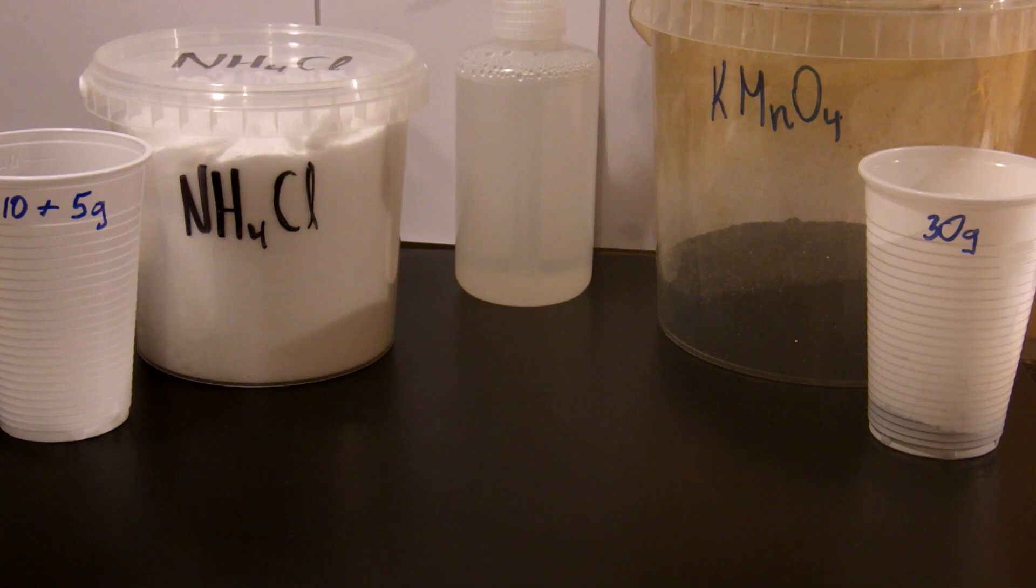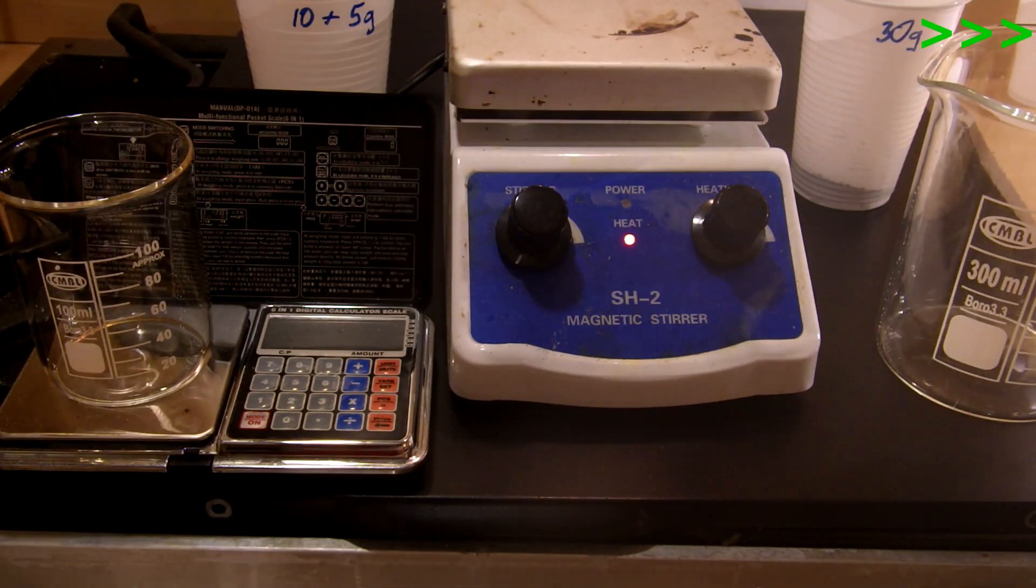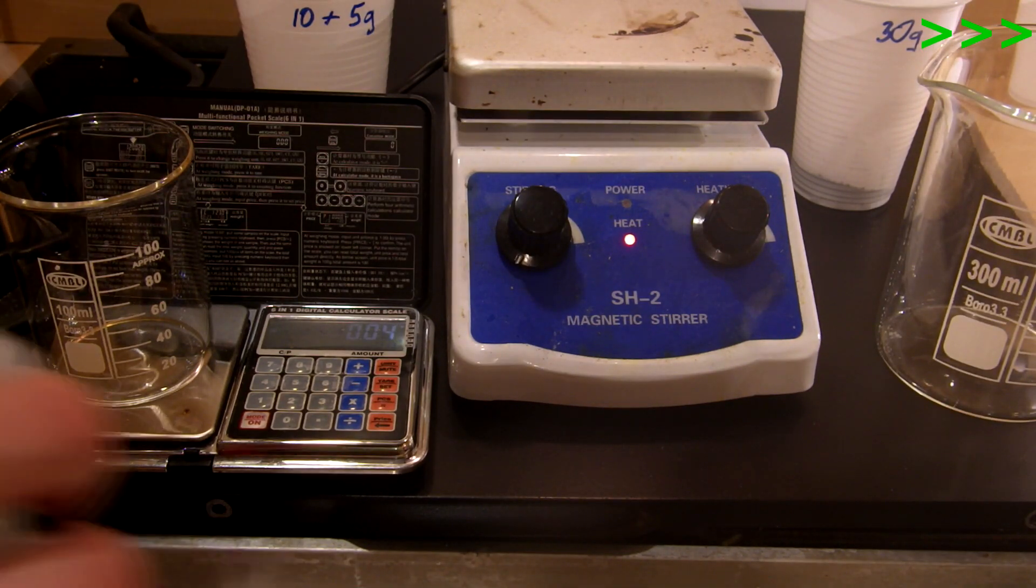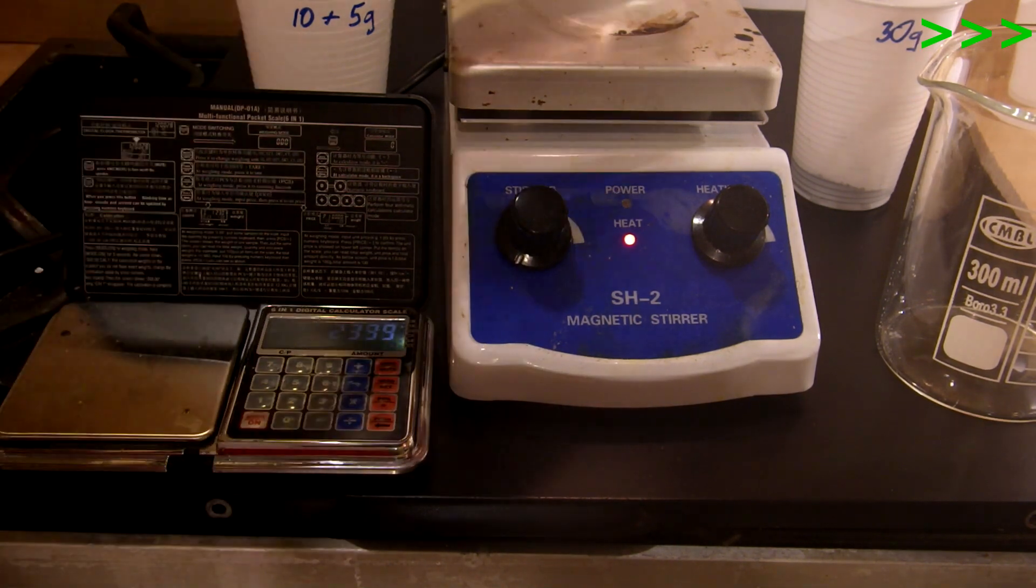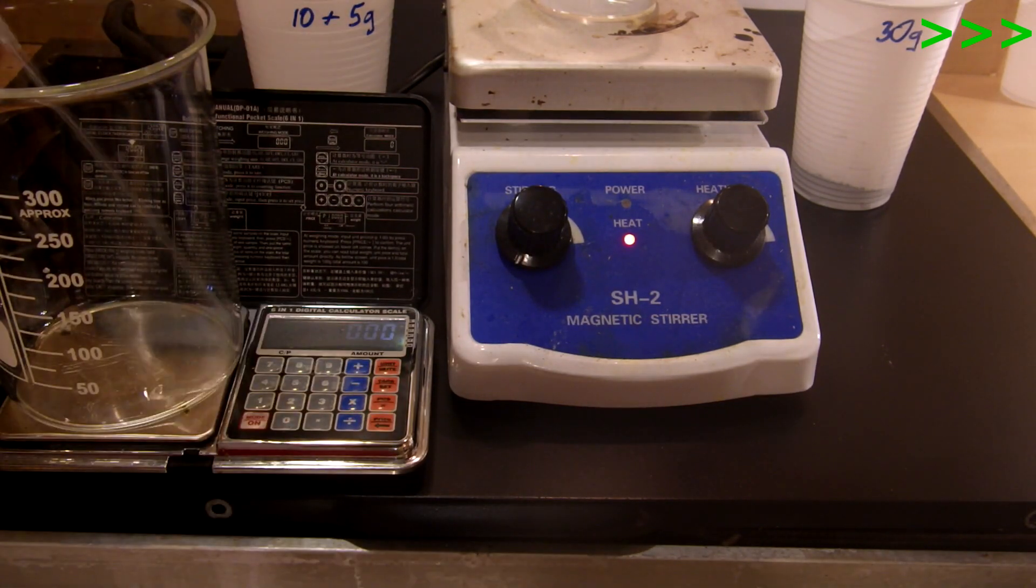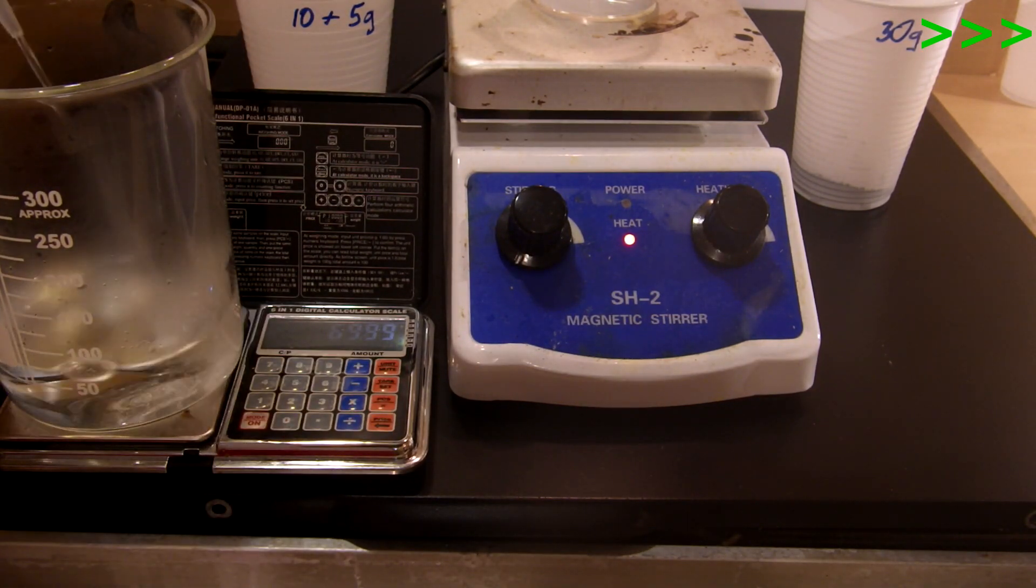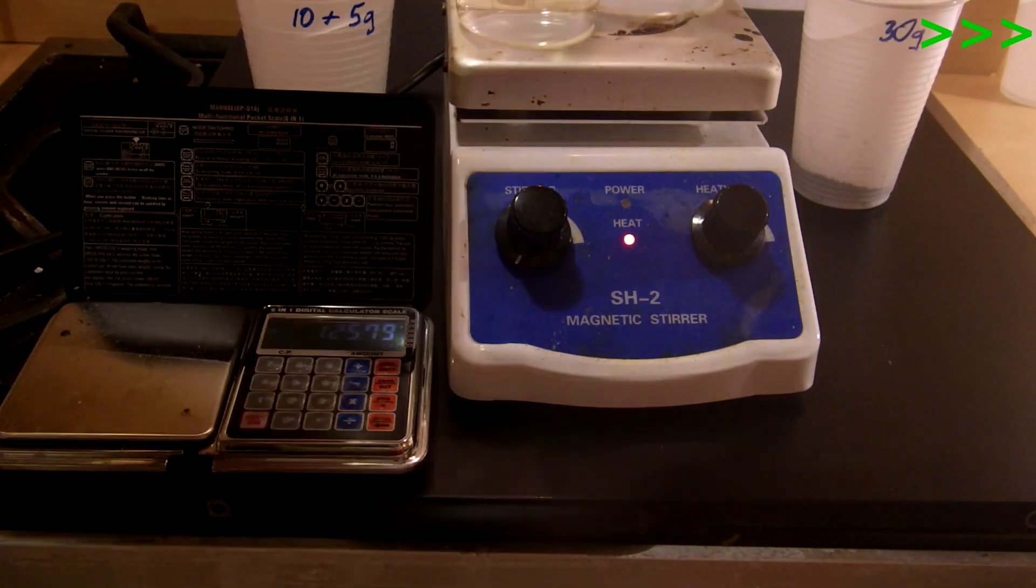Now the solvent. For best yield, as little water as possible should be used. Temperature should not break the 65 degree Celsius mark, otherwise permanganates start to decompose quite quickly. Therefore I looked up solubility for both compounds and I will need 30 milliliters of water to dissolve ammonium chloride and 120 for permanganate. I ended up adding a little more water for washing, but like 20 milliliters tops.